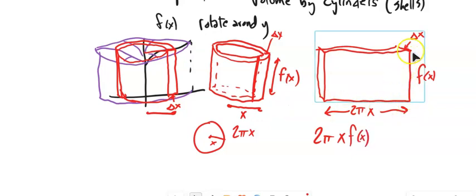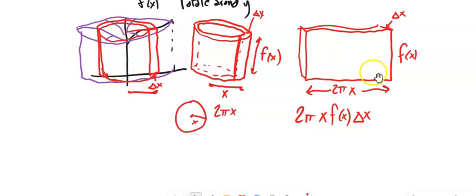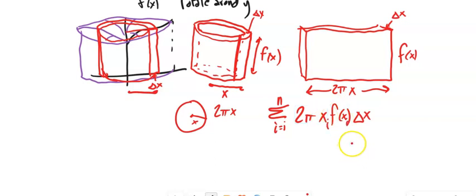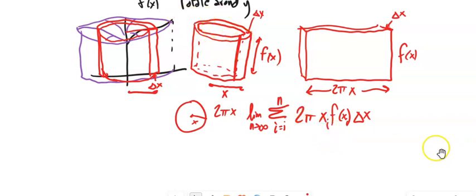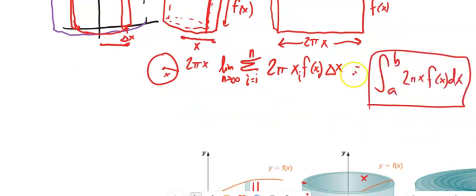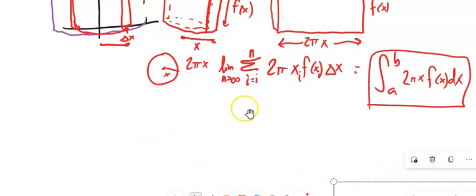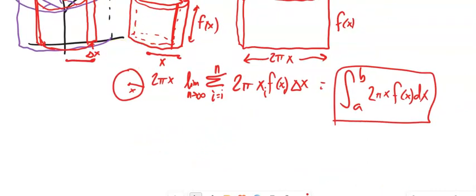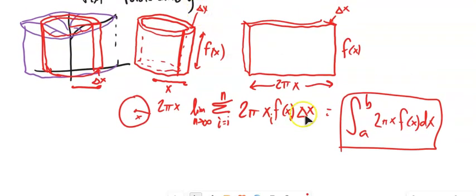So the volume of this thin cylindrical shell is 2π · x · f(x) · Δx — that's base times height times width. For a certain x value, that is the volume of one of these cylinders with a hole in it. If I want to add them all up, I let that run from 1 to n. Using calculus, I let this run to infinity, giving an infinite number of infinitely thin shells.